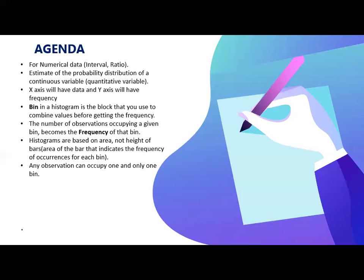The number of observation occupying in a given bin becomes the frequency of that bin. As I told earlier example, let's say in first bin you are placing 10 chocolates so the frequency will be 10 for that bin. The second bin you are placing three chocolates then the frequency of the second bin will be three. It will be like that.